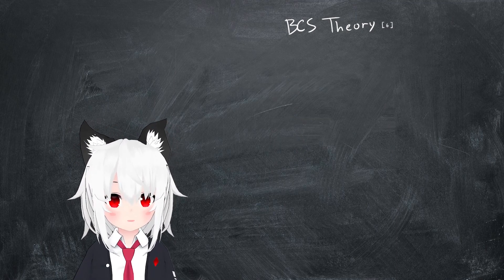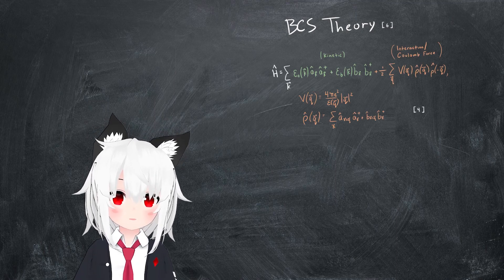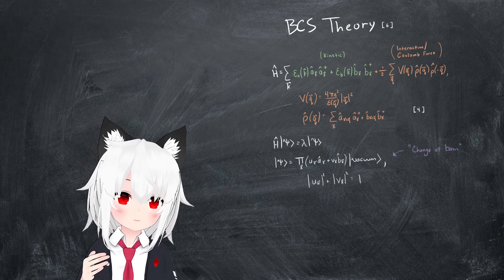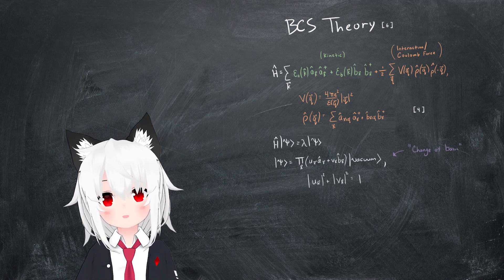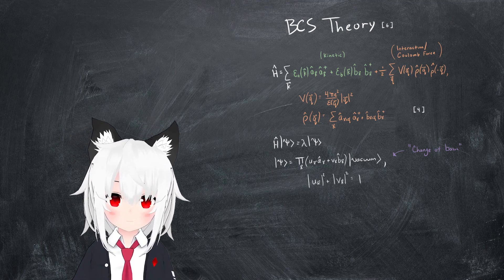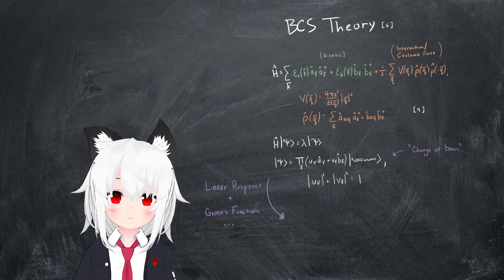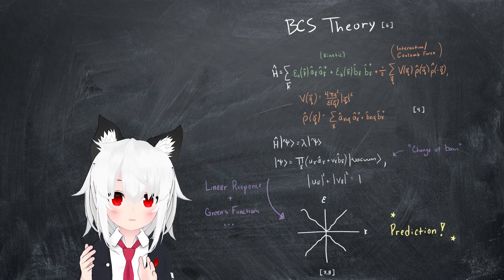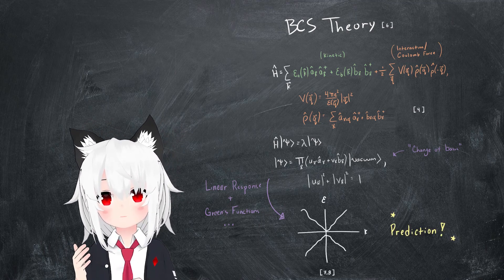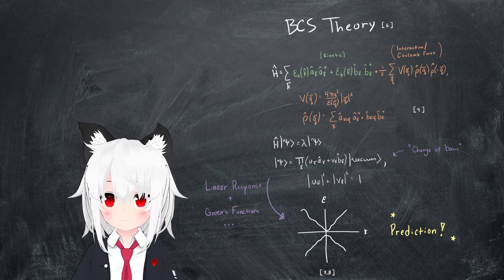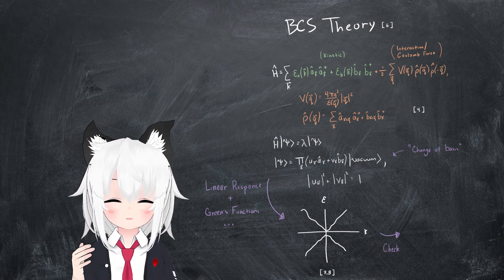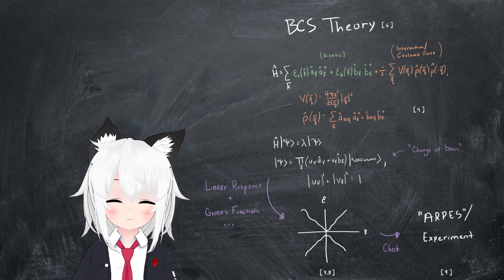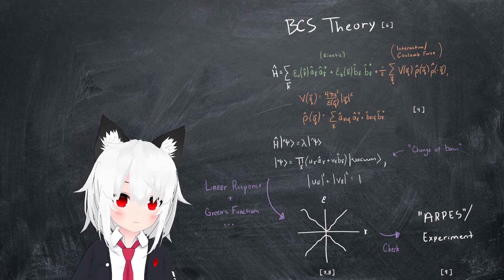In a nutshell, the general idea behind BCS theory is that you can diagonalize the Hamiltonian operator in the presence of a slightly attractive interaction by performing a change of basis on the wave functions, and obtaining a quasi-particle energy spectrum that way. This allows one to obtain various observables in the context of linear response theory, and ultimately provides us with a well-defined prediction for what the effective band structure should look like in the presence of excitons. This can then be checked experimentally using fancy experimental techniques like ARPES, which basically just uses conservation of momentum to probe the allowable energy states inside a material.